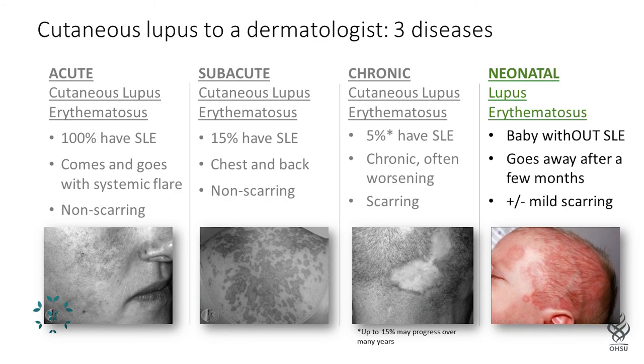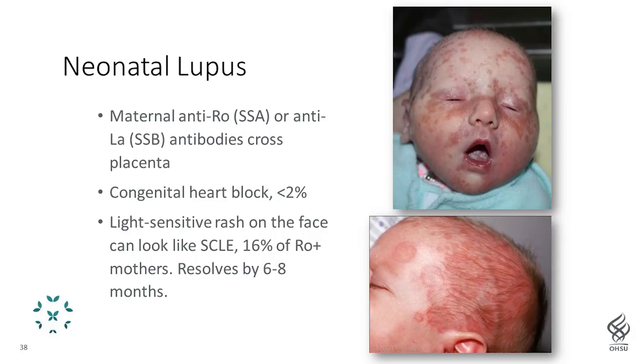Finally, neonatal lupus: this is a condition in which the mother has anti-Ro antibodies and those antibodies cross the placenta into the baby during development. The baby itself does not have lupus, but these antibodies in circulation can create problems similar to lupus. The worrisome manifestation is that babies can have heart problems — less than 2% of babies born to moms with anti-Ro antibodies will have heart block. About 16% will develop a very sun-sensitive rash on the face that looks like subacute cutaneous lupus. Since the antibodies get cleared from the baby's circulation over months and the baby doesn't make the antibodies, everything goes away over the first six months of life, though the baby can have a little scarring from the skin lesions.